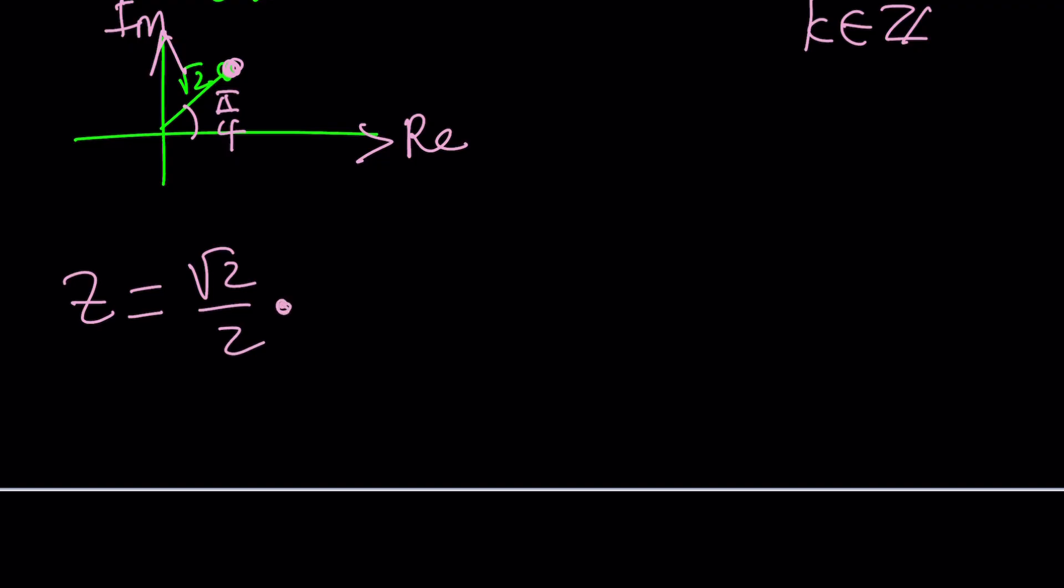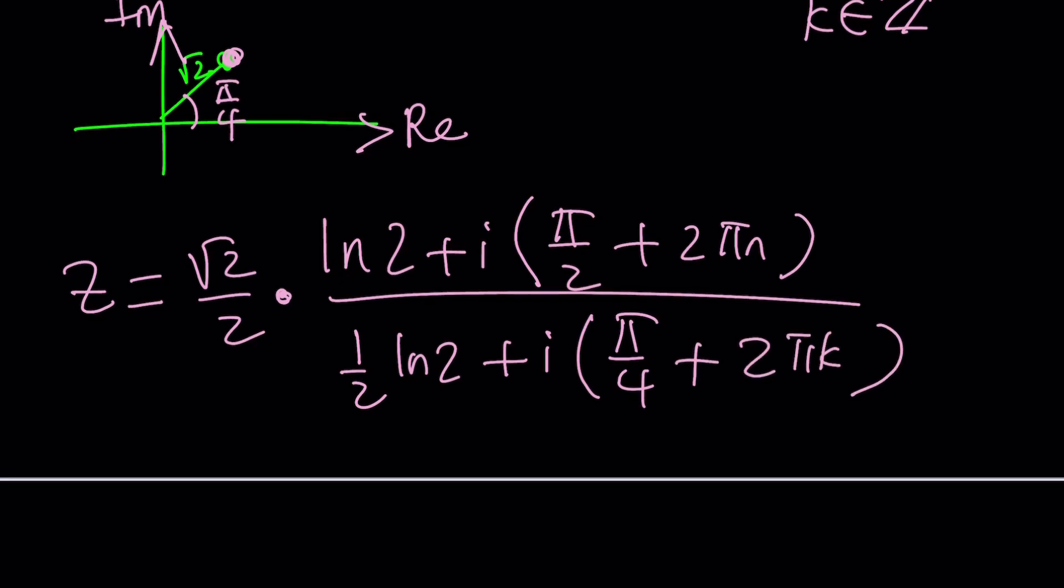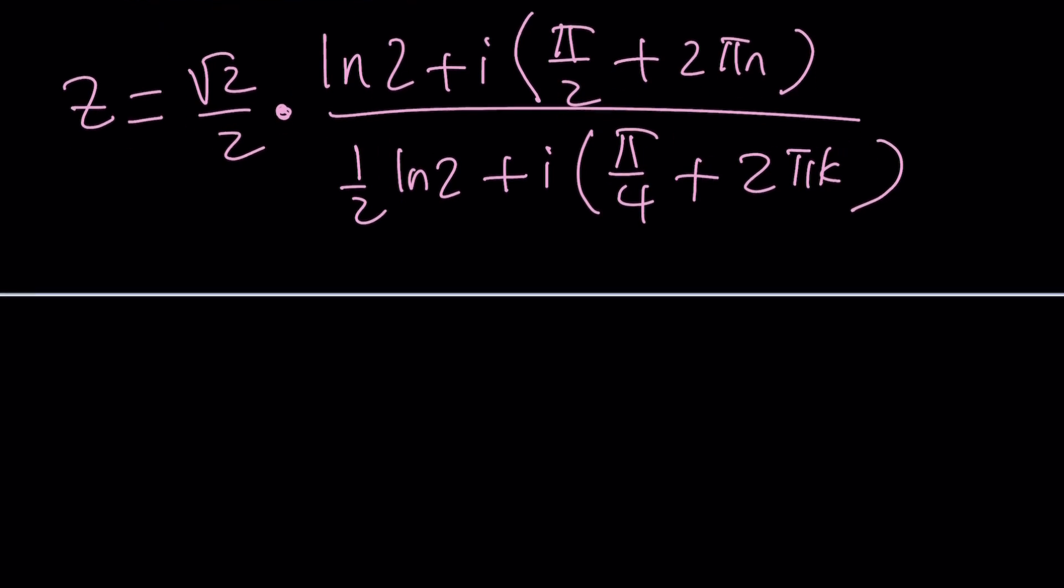Without further ado, let's just get to it because this is too much work. I think you deserve to see it. So this is what it's going to look like after I isolate z and substitute everything. This is kind of like a gigantic ginormous expression, really long, but that's what it is. That's why this is called complex numbers. Very complex, isn't it?